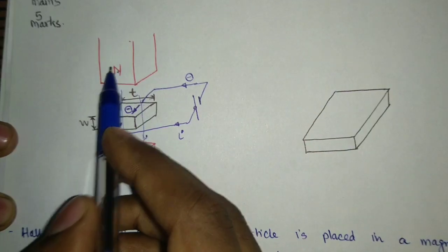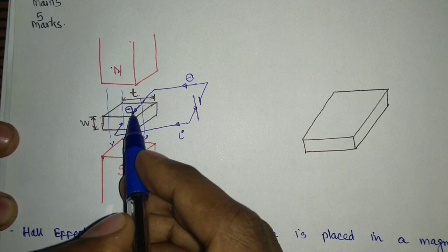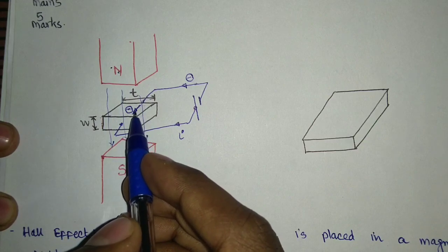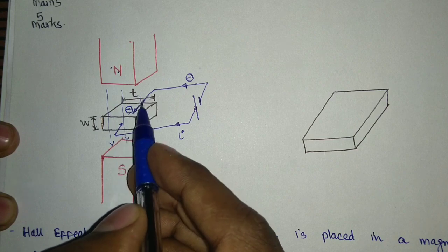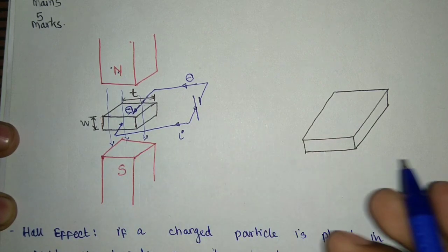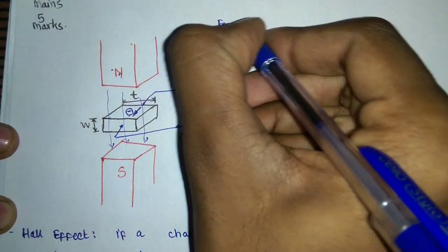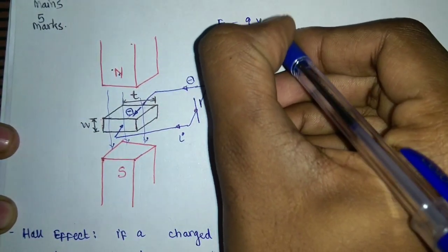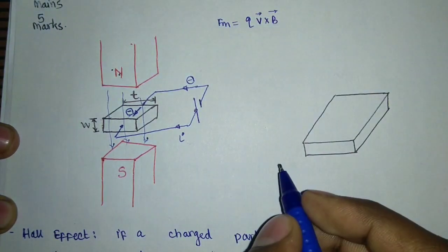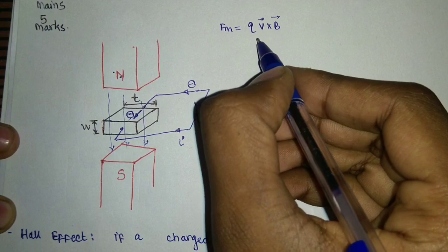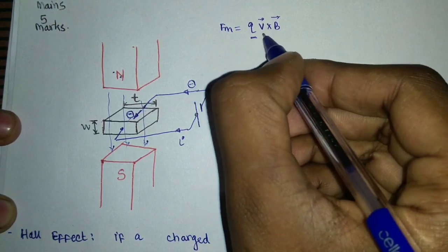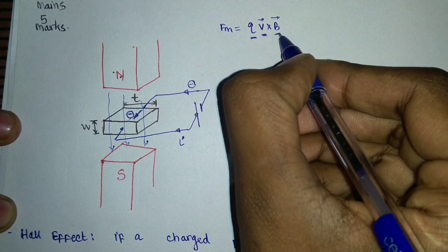But because of the magnetic field here, this particular charge is going to feel a deflecting force, and its path from this straight line is going to get deviated. The magnetic force is given by F_magnetic = QV×B. That is the magnetic force that will be applied onto the particle. Q is the charge, V is the drift velocity, B is the magnetic field.